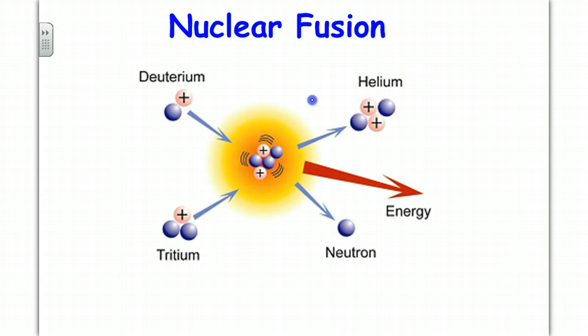Nuclear fusion is where you have two very light isotopes, light in mass, in which they come together to create a heavier isotope and gives off a lot of energy. This is typically found in the sun, nuclear fusion.